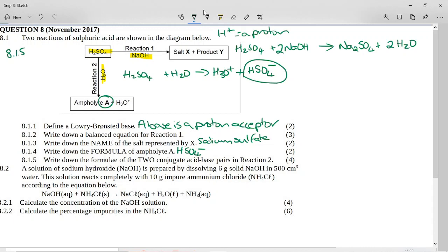If you want the formulae for a conjugate acid-base pair, you need two things that differ by a proton, an H plus. So the one pair is easy. It's the water and its partner. If we add an H plus to water, its partner is the H3O minus.